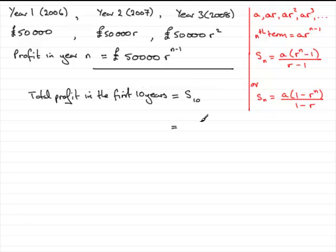And so, according to the formula then, S10 is going to be the first term, which is 50,000, multiplied by the common ratio, which we now know is 1.09, to the power n, so that would be 10, take away 1, and that's all divided by the common ratio minus 1, 1.09 minus 1.